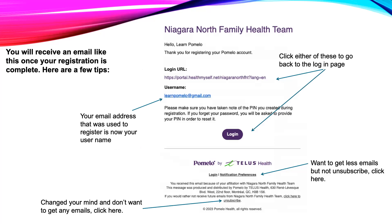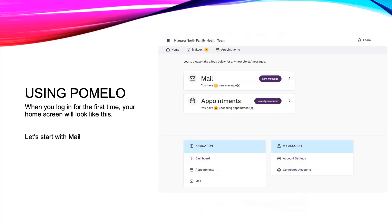After registration, you will get an email that looks like this. Here, you can change your notification preferences as well as unsubscribe from emails. Niagara North uses Pomelo to send information to patients, such as upcoming groups or office closures. Once you've logged into Pomelo for the first time, this is what your home screen will look like.